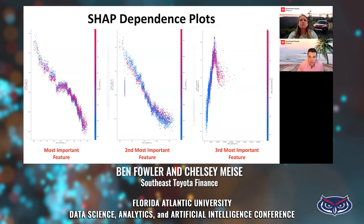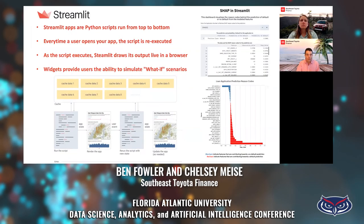Interactions with the most significant other feature are also represented in the vertical dispersion of these plots. For example, on amount annuity X, if amount goods price X is also high, that provides even greater lift towards a marginal contribution of a default prediction. On EXT_SOURCE3, some values have lower SHAP values due to interaction with the EXT_SOURCE1 feature.